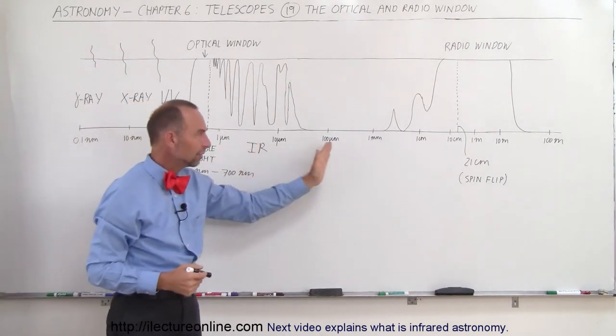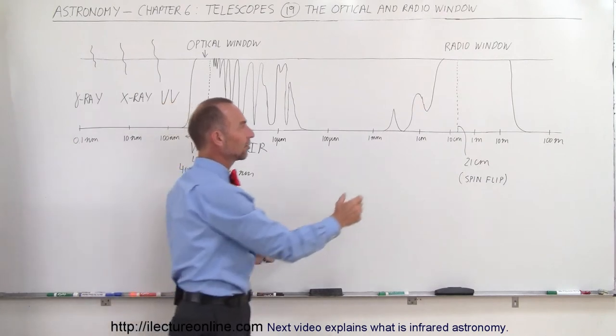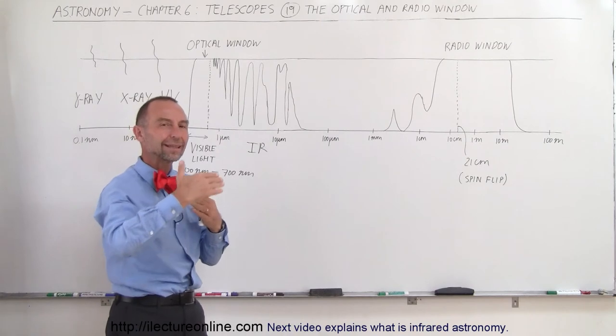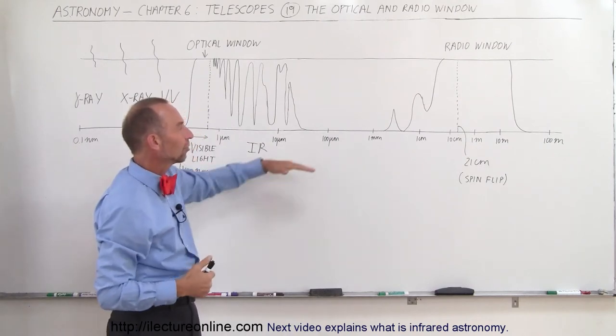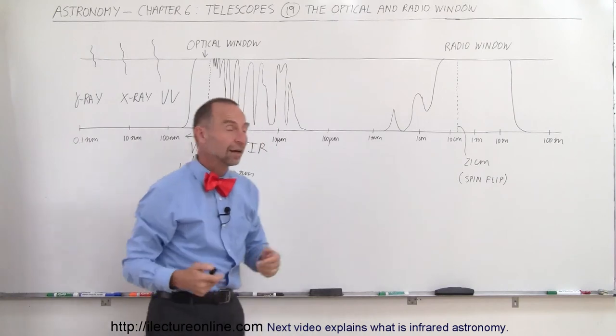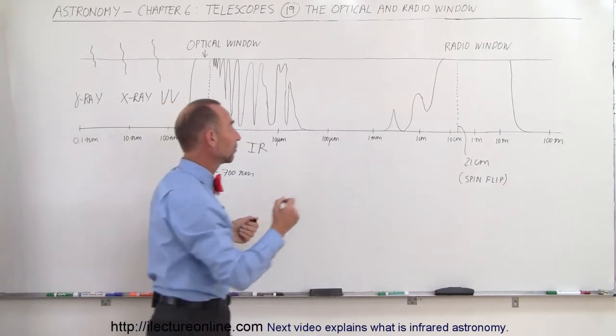Then we get into the range of microwaves. And you can see that some of the longer microwaves we can indeed see to some extent, but not very well. They do get blocked at large distances through the atmosphere, and there are some areas here where very little of the microwave radiation gets through.